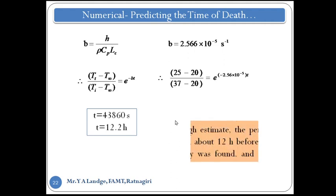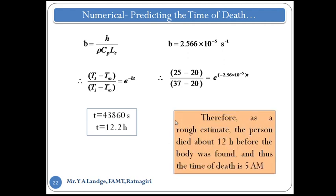From this result we can estimate the time of death. The body was found at 5 pm and the calculated time since death is approximately 12 hours. Therefore the person died about 12 hours before the body was found, placing the time of death at approximately 5 am.